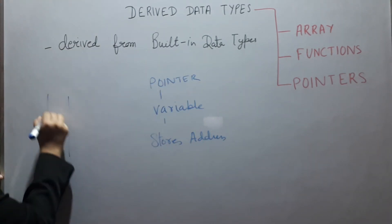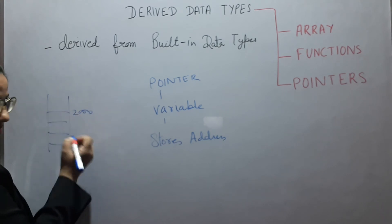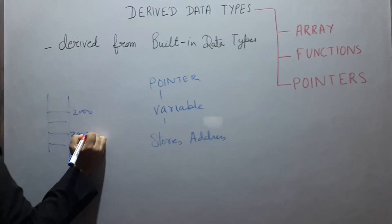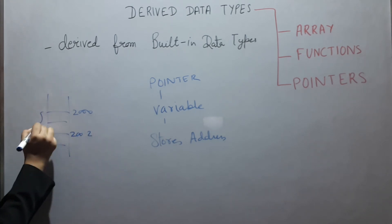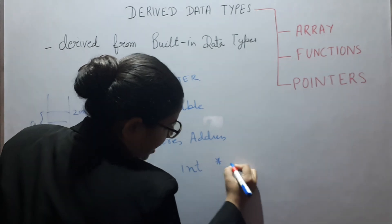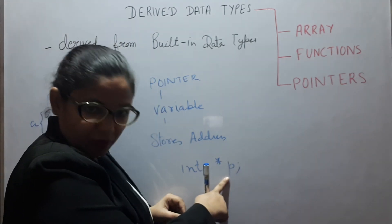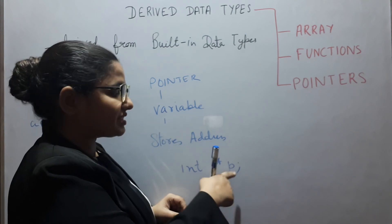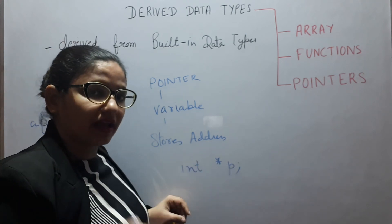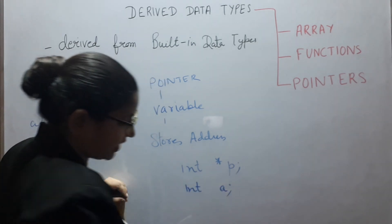What does it mean? Suppose A is having this address 2000. int *P, that means P is a pointer. That means this P can store address of int A.